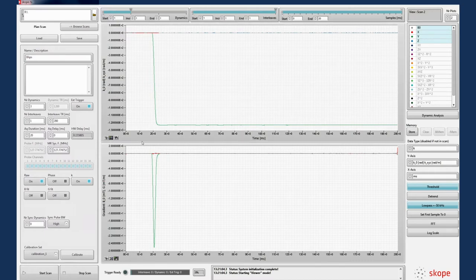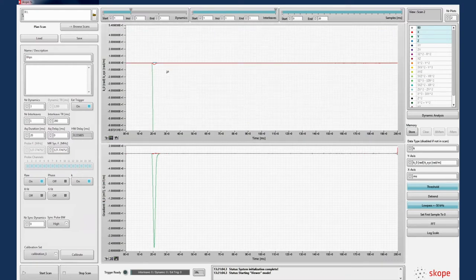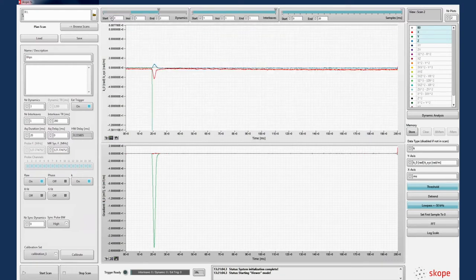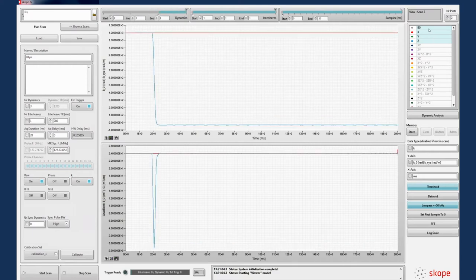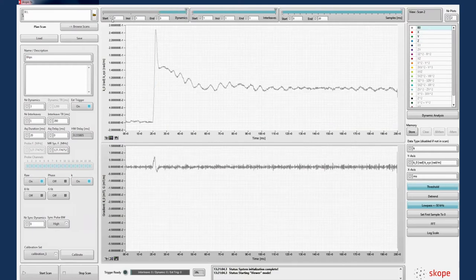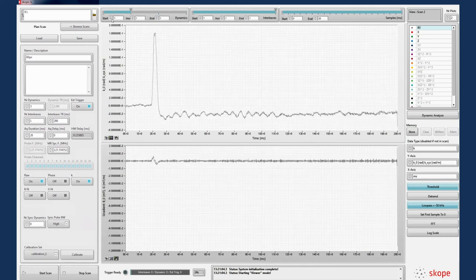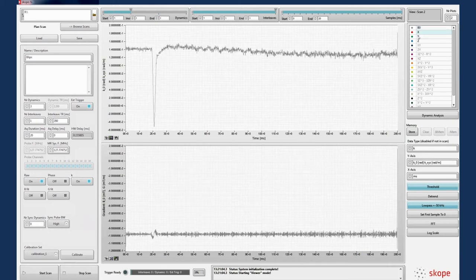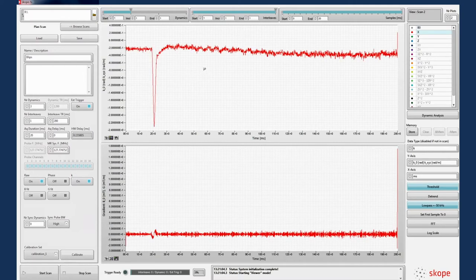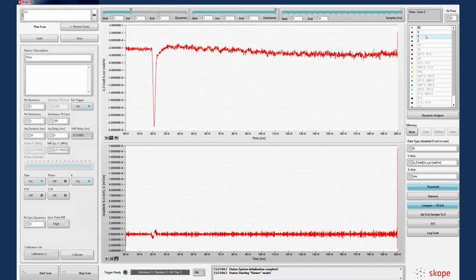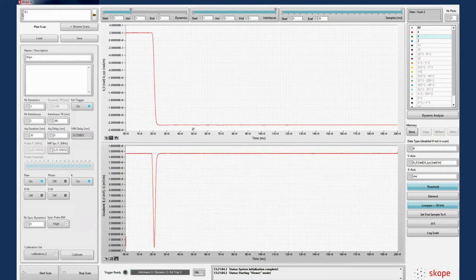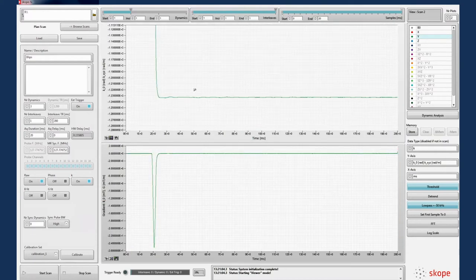The effect of eddy currents and gradient vibrations can be seen. Note that as we step through the three dynamics of the scan, viewing the k-space traversal, each axis has a different response. For example, each gradient blip couples strongly to the B0K component. Switching to viewing the gradient directly, we see how blips such as these can form the basis for a characterisation of the gradient impulse response function.